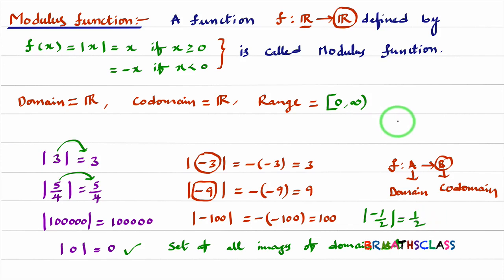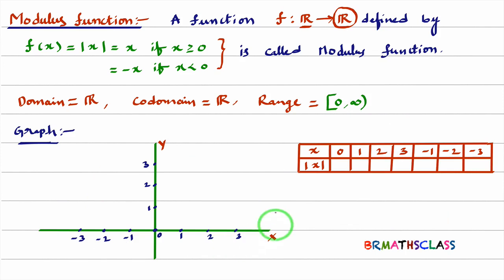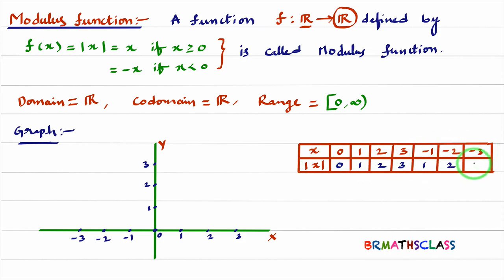Now we will learn how to draw the graph of modulus function. I considered a coordinate axis with some x values. When x is 0, modulus of 0 is 0. Modulus of 1 is 1. Modulus of 2 is 2. Modulus of 3 is 3. Modulus of minus 1 is plus 1, modulus of minus 2 is plus 2, modulus of minus 3 is plus 3. I will plot all these points. The first point is (0, 0).